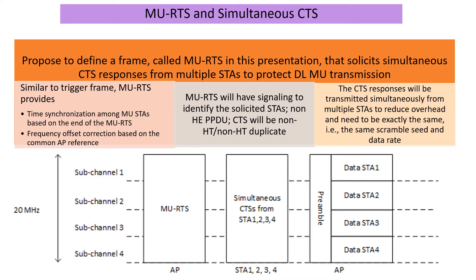MU RTS is a new control frame defined in 11AX. It needs to be audible to legacy stations, which means the duration field and the PHY rates used in MU RTS should be decodable by legacy stations. They have to go as SU transmissions, and they need to be decodable even by 11a and 11g stations. So MU RTS is a legacy PPDU carrying duration information that can be heard by anyone able to parse a legacy PPDU, announcing the reservation and calling out the stations which have to respond with CTS.